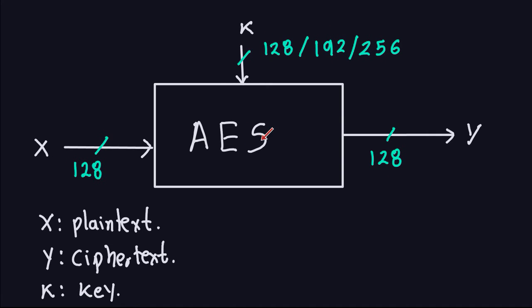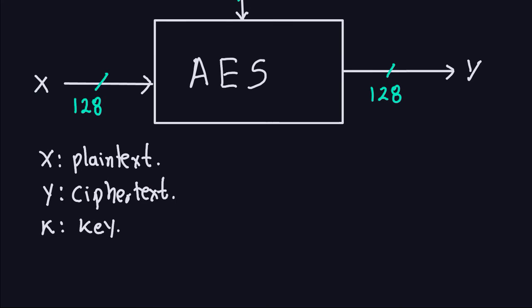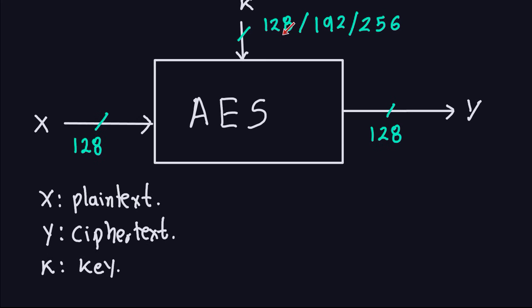The Advanced Encryption Standard is a block cipher with a 128-bit block size, and the key size is variable: 128, 192, or 256 bits. As in DES, we have rounds here. In DES there were only 16 rounds and it was fixed. In AES, the number of rounds depends on the size of the key, which determines how many rounds occur in the internal structure.